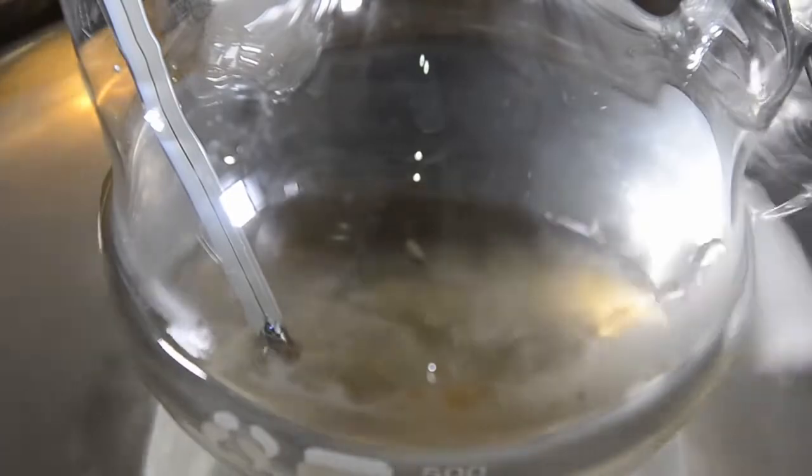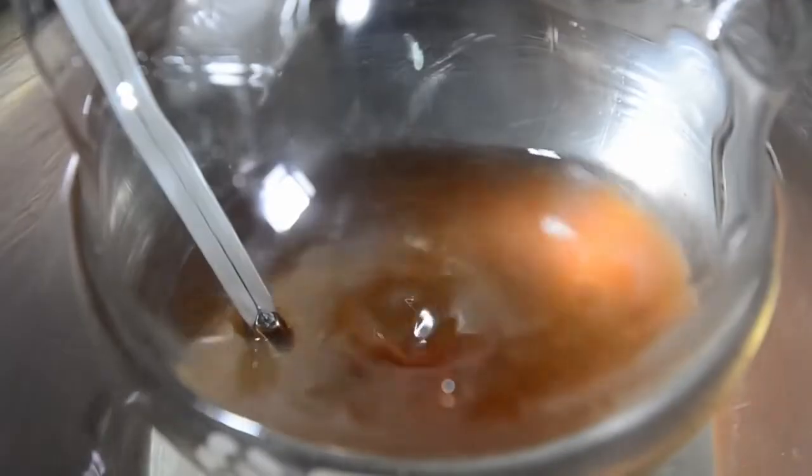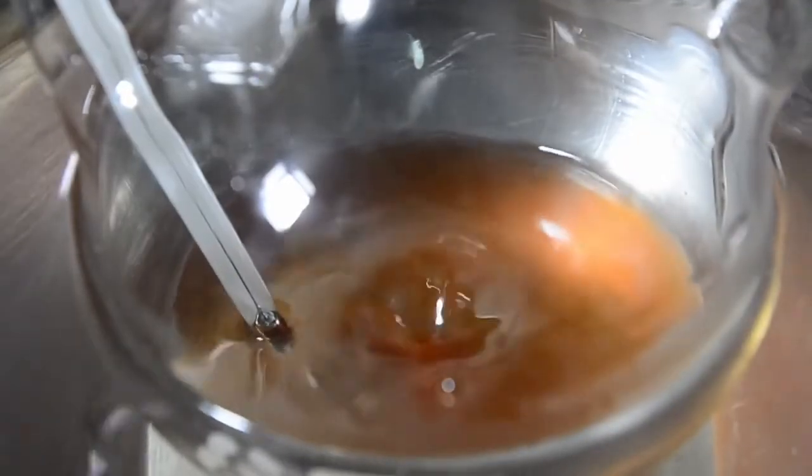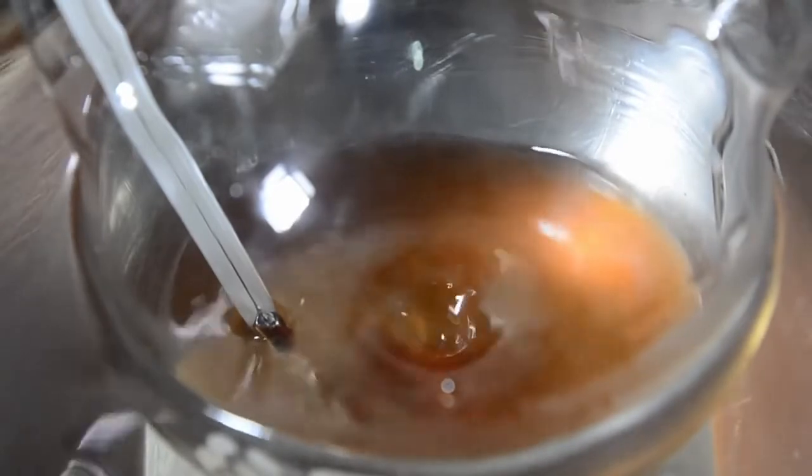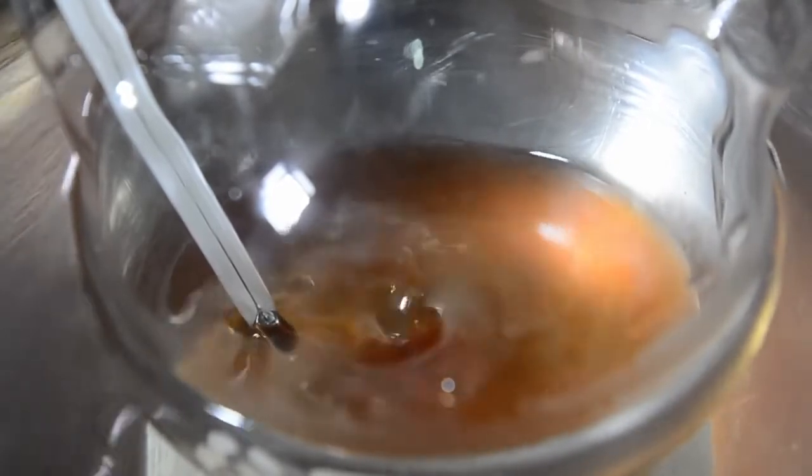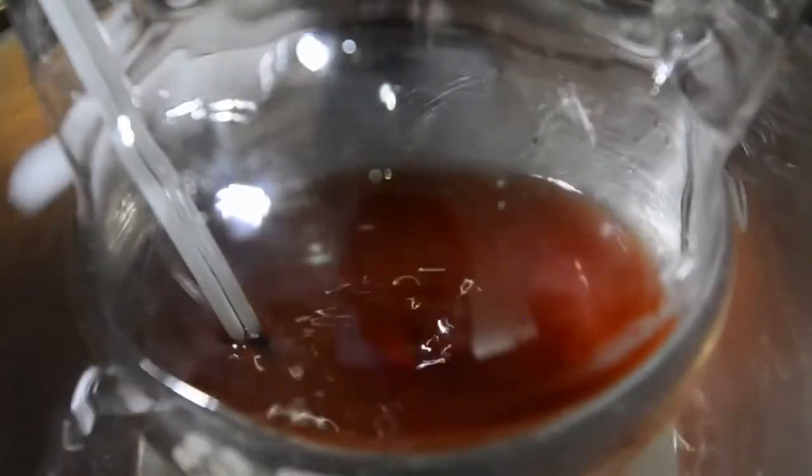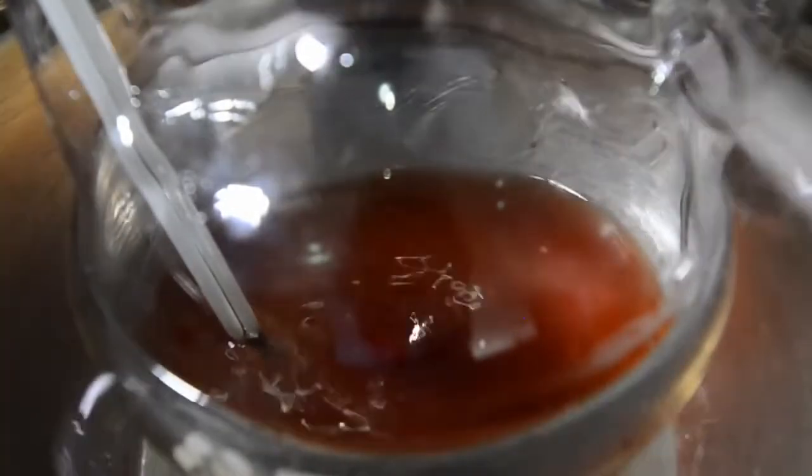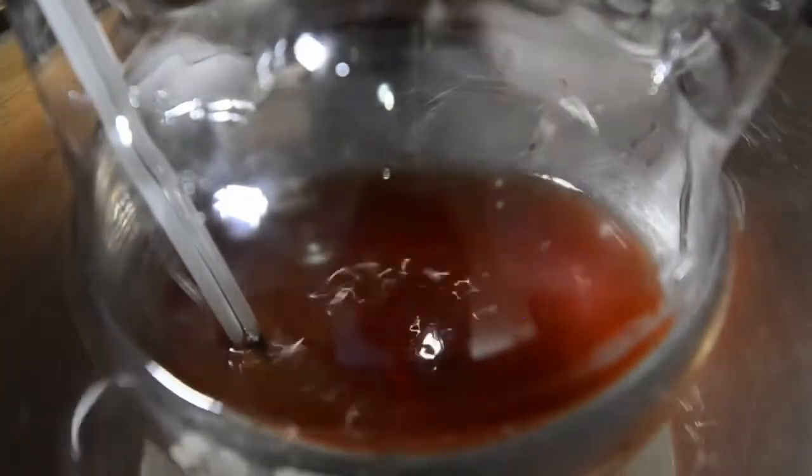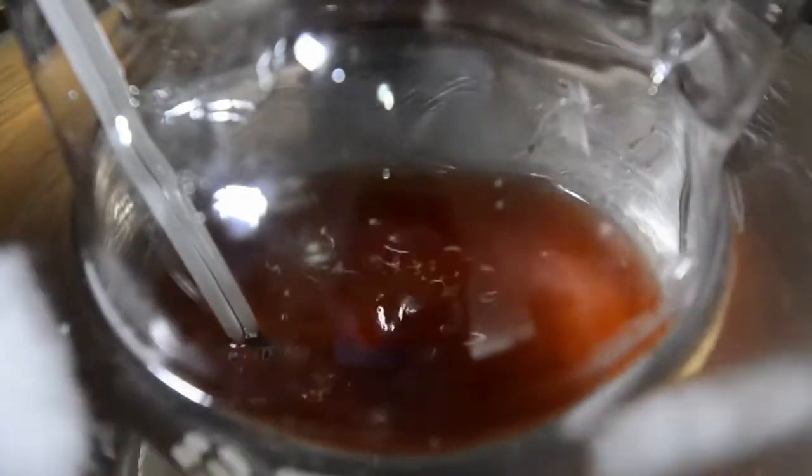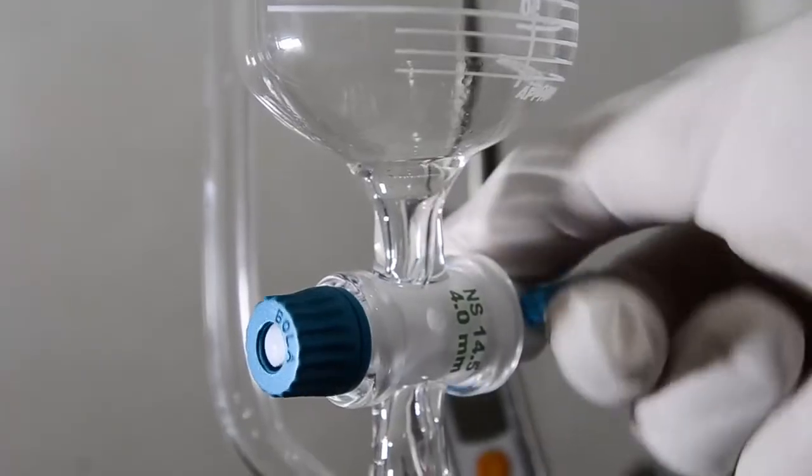After about 15 minutes you should see the first trace of a yellow color in the flask. Soon this becomes more intense and may turn to a dark red color, which usually disappears again towards the end of the reaction. The entire acid addition takes around 2 hours to complete, but you'll need to keep stirring for a further hour after this.